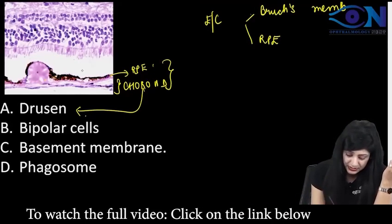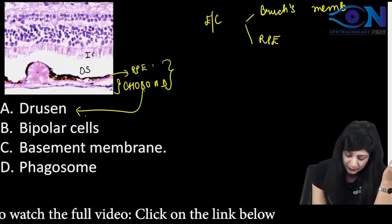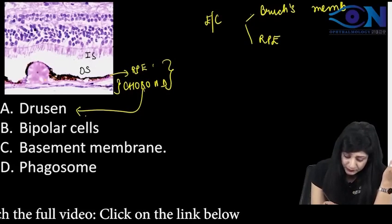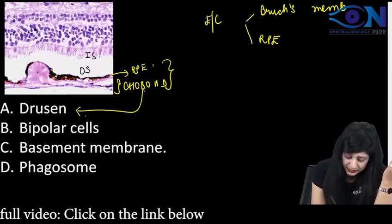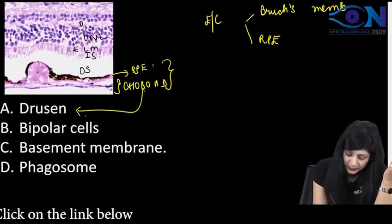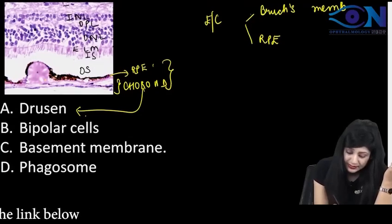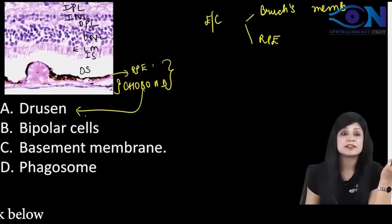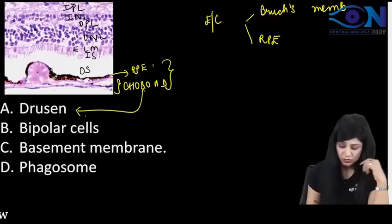You can see the other layers. See this is outer segment, inner segment, then you can see this is the external limiting membrane, then outer nuclear layer, outer plexiform layer, inner nuclear layer and the inner plexiform layer. So you can see the whole histology.